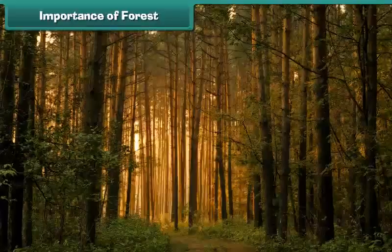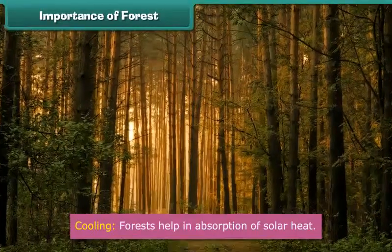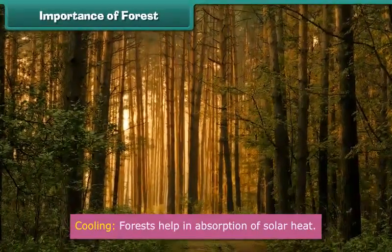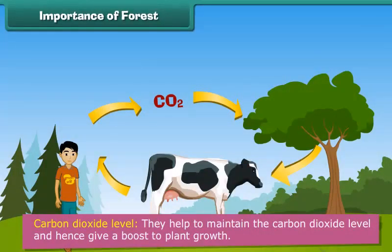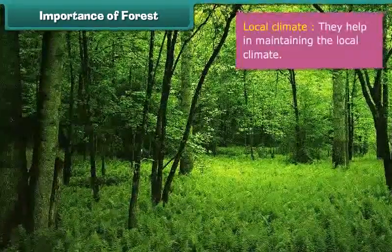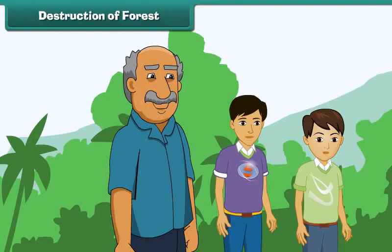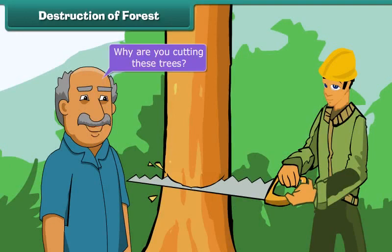Wood: we get timber from forests to build furniture, ships and houses. Food products: we get many varieties of fruits and honey from the forest. Shade: by cooling the air and ground around them, the shade from forest trees helps to cool the earth's temperature. Cooling: forests help in absorption of solar heat during evaporation and transpiration. Carbon dioxide level: forests help to maintain the carbon dioxide level and hence give a boost to plant growth.